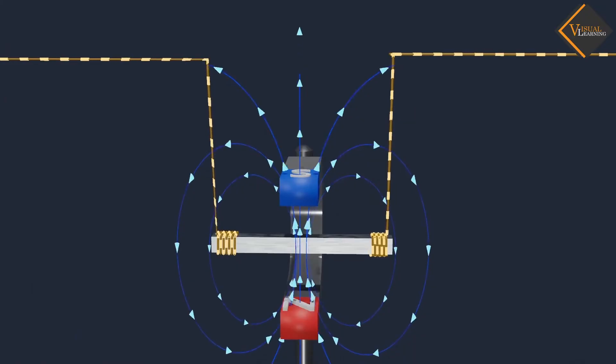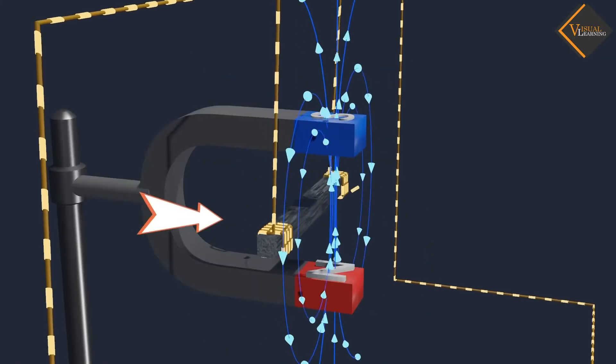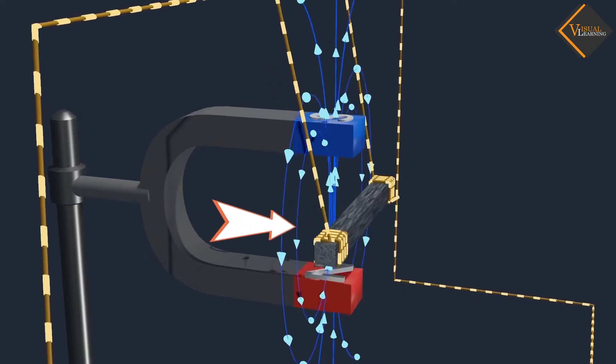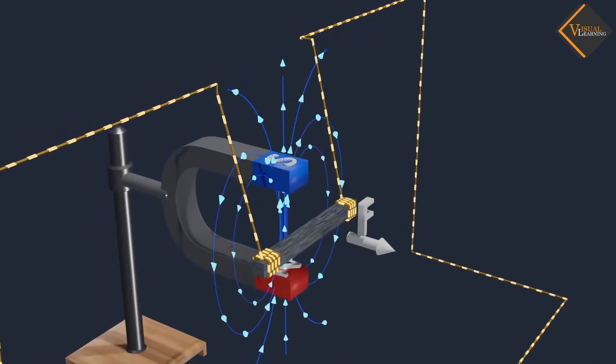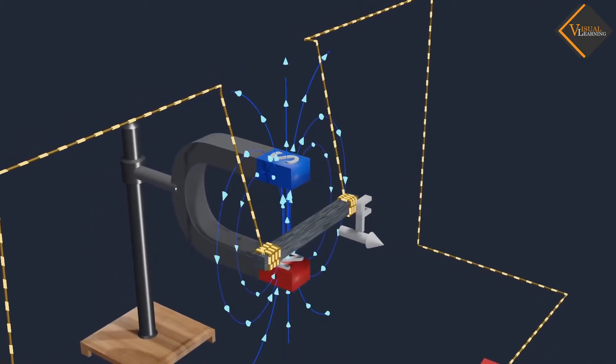When we reverse the direction of current flowing through the rod, we observe that the rod gets displaced towards the right. This happens because force is exerted on the current carrying aluminium rod when it is placed in a magnetic field.